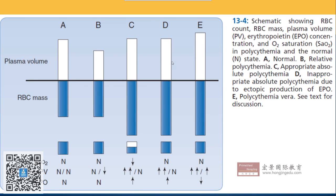Panel E is Polycythemia Vera. What is the difference between E and D? In Polycythemia Vera, the patient's RBC mass increases, and the total blood volume also increases — so both RBC mass and plasma volume are elevated. The key differences between these panels involve changes in plasma volume, RBC mass, arterial oxygen saturation, and EPO levels.